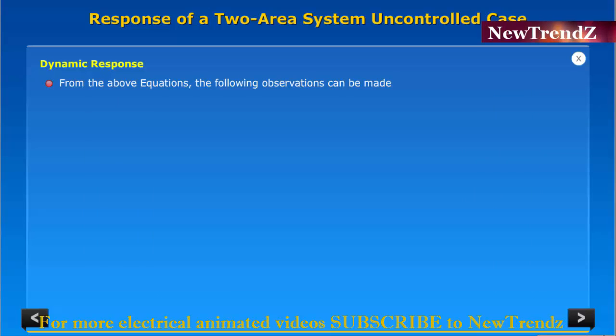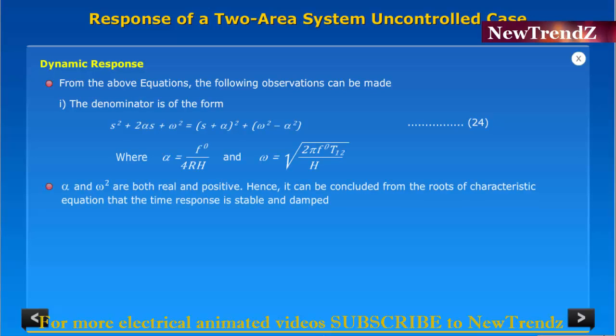From the above equation, the following observations can be made. The denominator is of the form shown. Alpha and omega square are both real and positive. Hence, it can be concluded from the roots of characteristic equation that the time response is stable and damped.